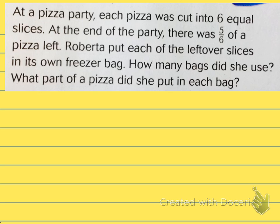At a pizza party, each pizza was cut into six equal slices. At the end of the party, there were five-sixths of a pizza left. Roberta put each of the leftover slices in its own freezer bag. How many bags did she use? What part of the pizza did she put in each bag? Let's go back and see if we can figure it out. First of all, how many slices of pizza were eaten?